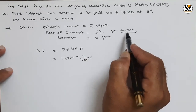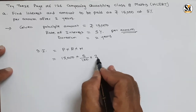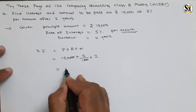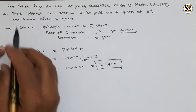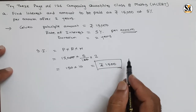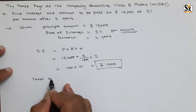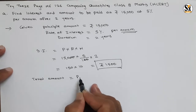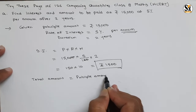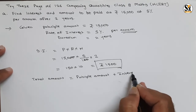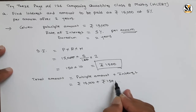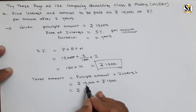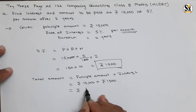Since the rate is per annum and the duration is two years, there will be two annums, so N equals two. The two zeros will get cancelled, then 150 into 10 gives rupees 1,500. So this is the simple interest. The total amount to be paid equals principal amount plus interest, which is 15,000 plus 1,500, giving rupees 16,500.